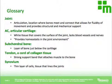What is AC or articular cartilage? This is basically a white tissue that covers the surface of the joint. Interestingly, it actually lacks blood vessels and nerves. Its main purpose is to provide a nice homeostatic environment for the joint. A subchondral bone is a thin layer of bone that's just below the cartilage.